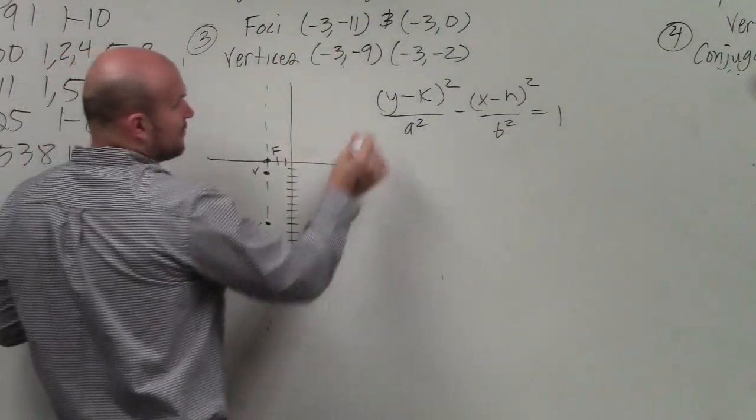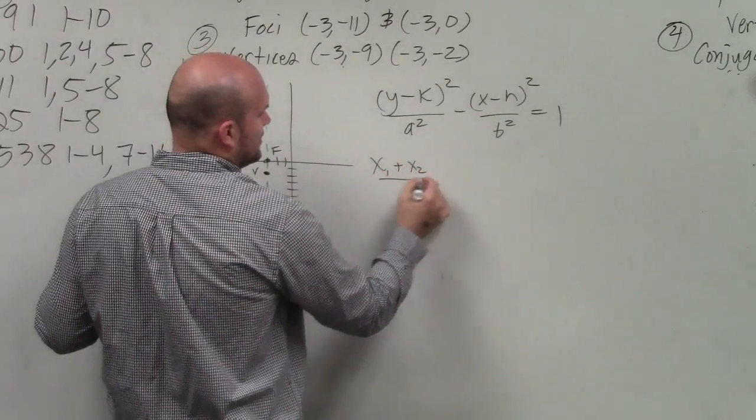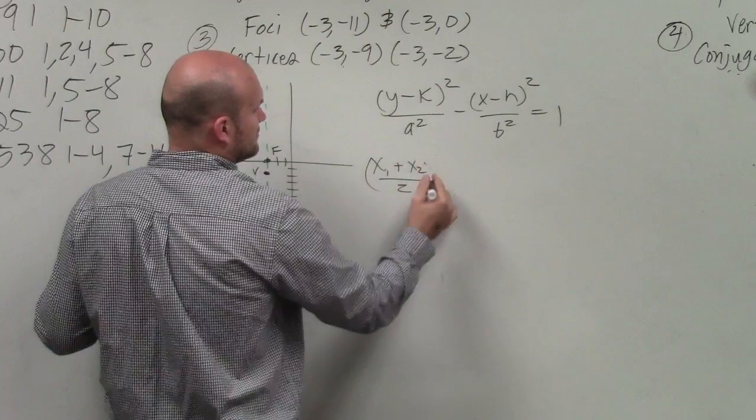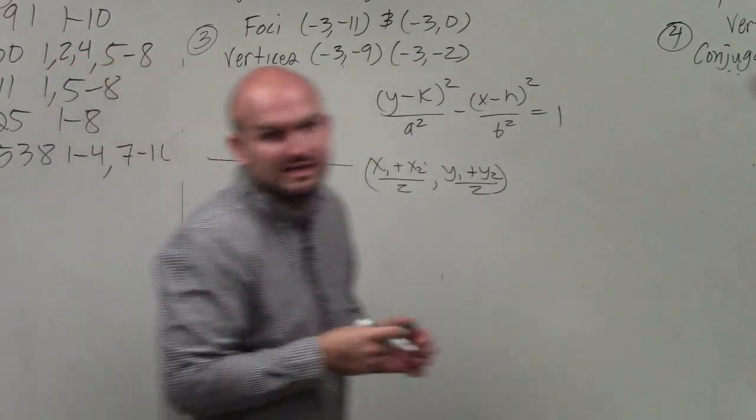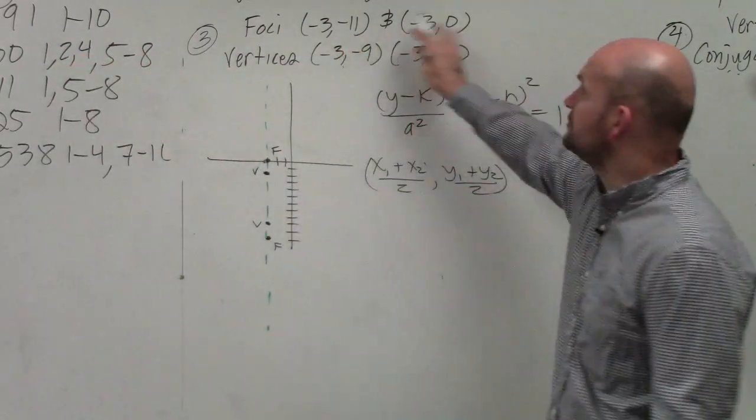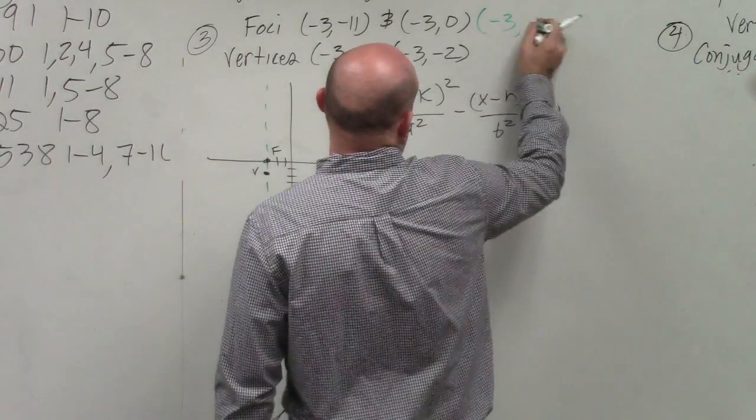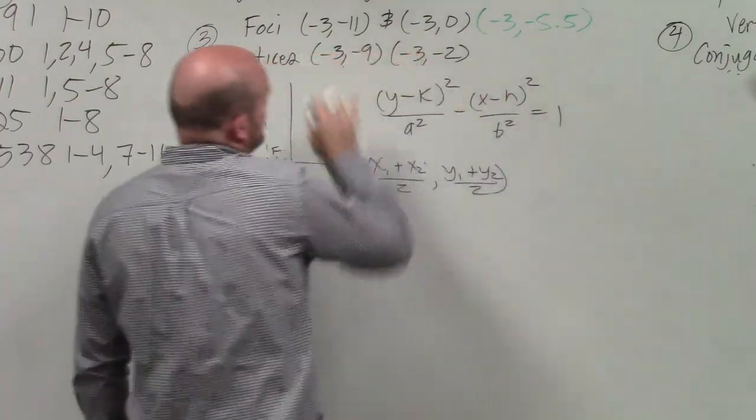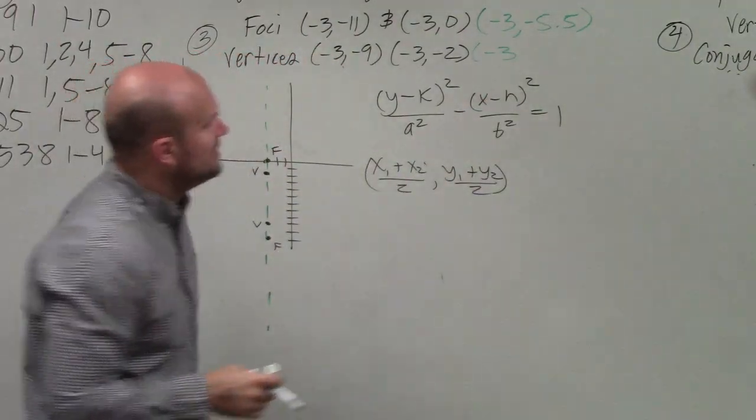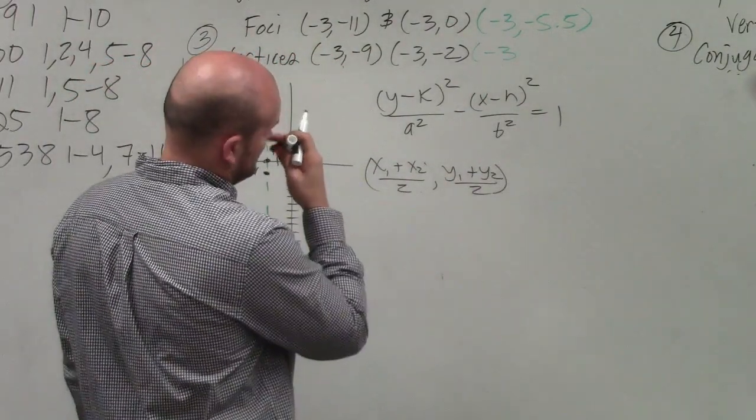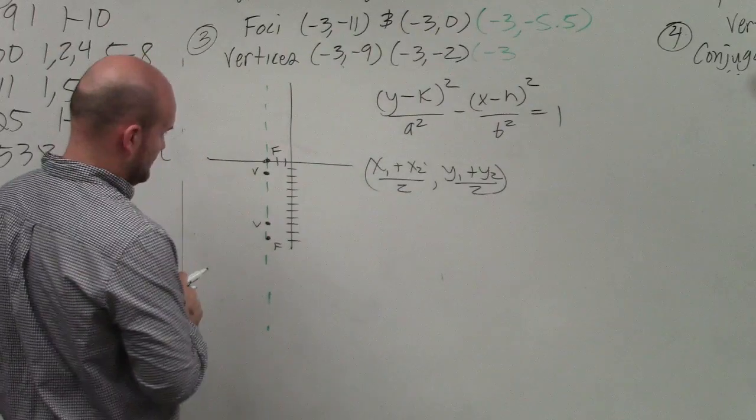But the purpose of this kind of problem is sometimes counting doesn't always work. A lot of times we can use the midpoint formula. So if you're using the midpoint formula between these two points, the midpoint formula is x1 plus x2 divided by 2 comma y1 plus y2 divided by 2. That will give you the midpoint. And if I do the midpoint of negative 3 and negative 11, I get negative 3, negative 5.5.